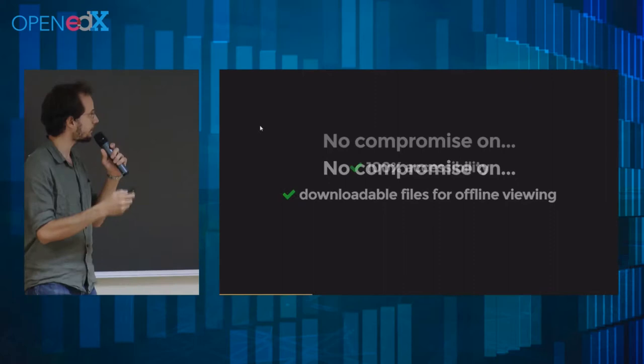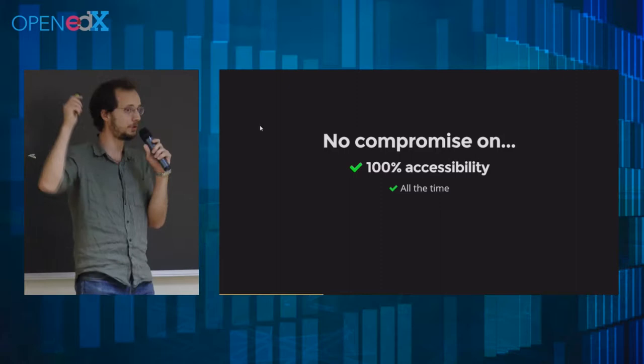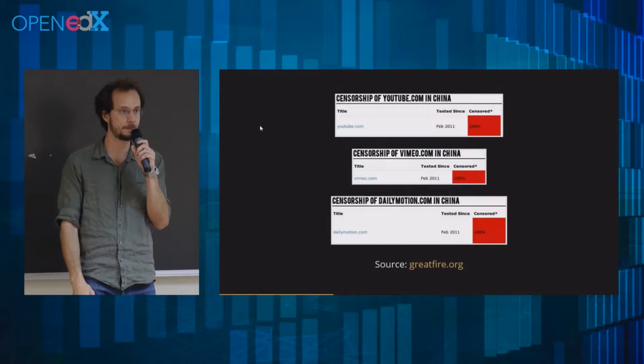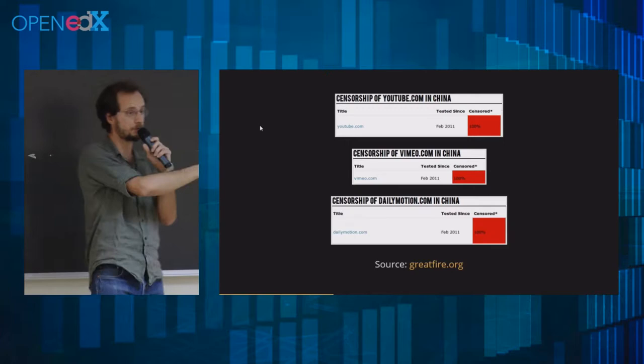You can't compromise on 100% accessibility. That means accessible all the time and for everyone, not just 80% of the world. I'm looking at you, China, YouTube, and Dailymotion — and I'm picking on China, but it's also true for many countries.